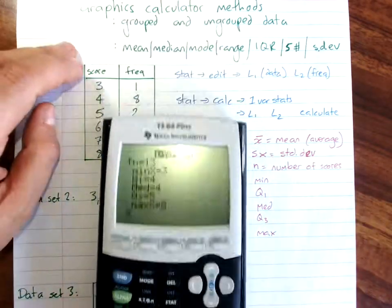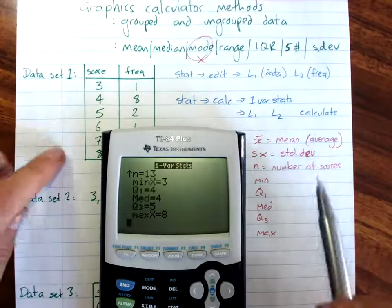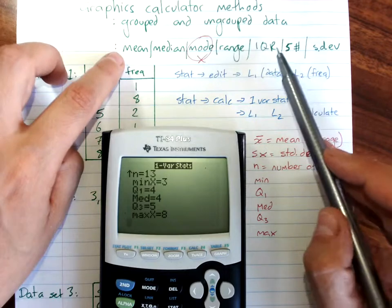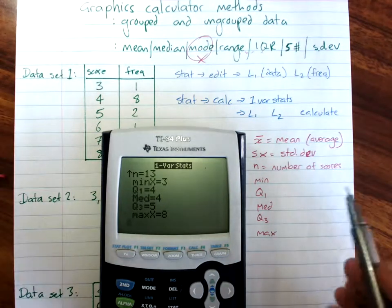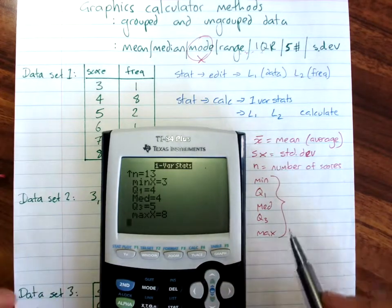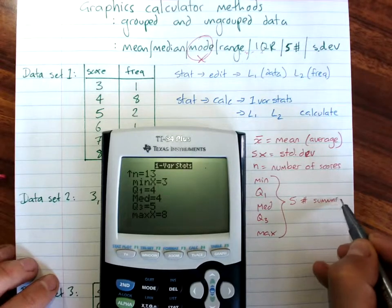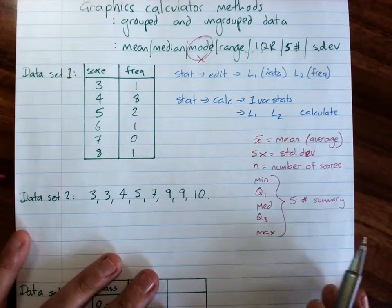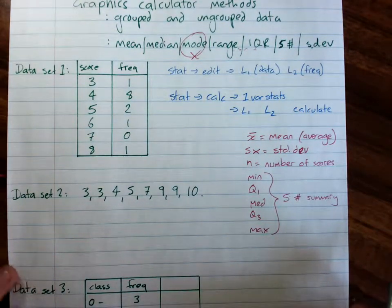The only thing I might ask you to calculate that isn't there is the mode. All of these you can get, or the range and the interquartile range, you can work out from what's given to you. And remember, of course, that all those five together are your five number summary. So if you're asked for that, it's there. So anything I ask you to calculate, you can get with the graphics calculator.